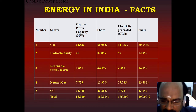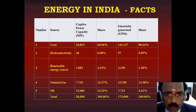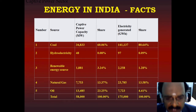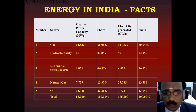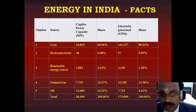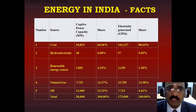Natural gas contributes 13.58 percent and oil 4.41 percent. The total captive power capacity is 58,000 megawatts in India. Electricity generated from all sources equals 1,75,000 gigawatt-hours. This is the energy profile of India.